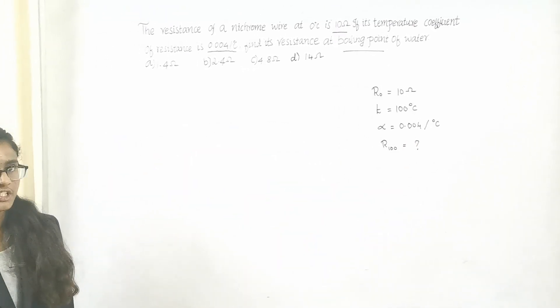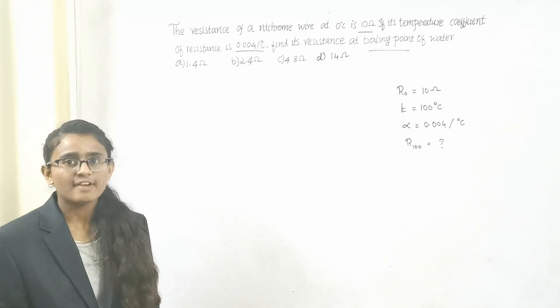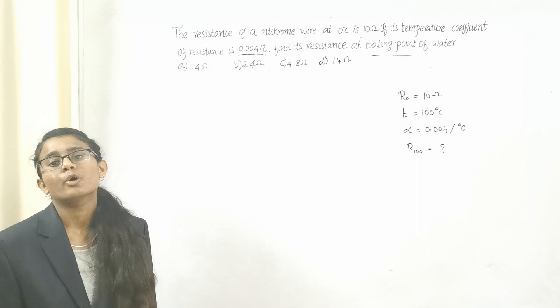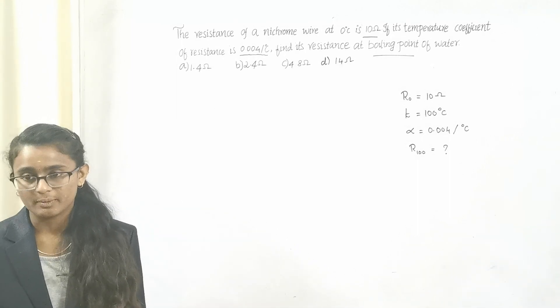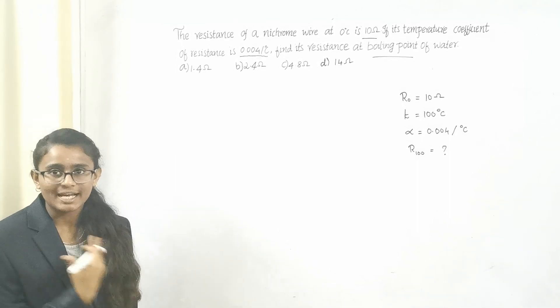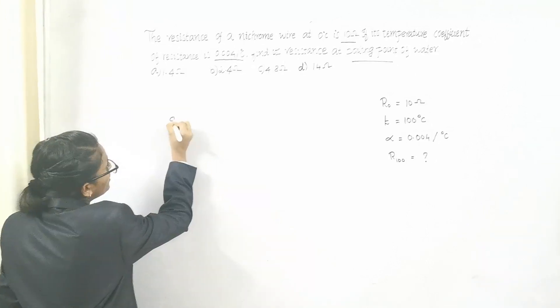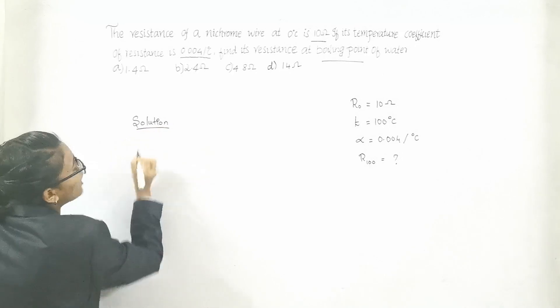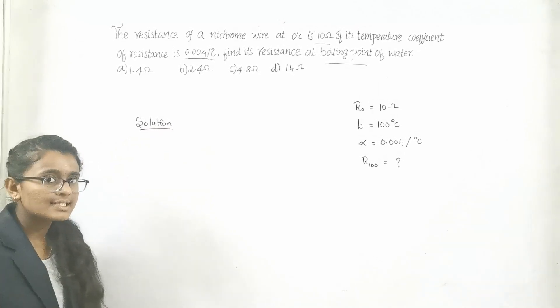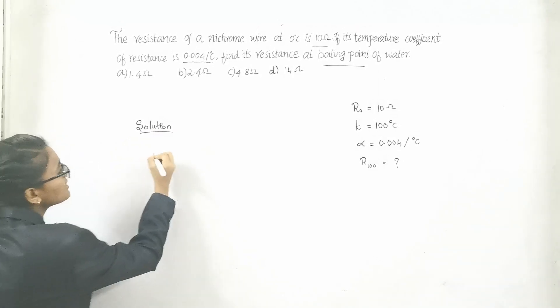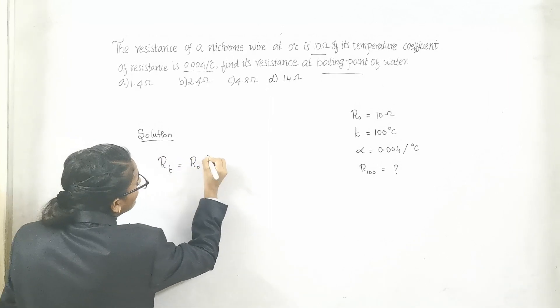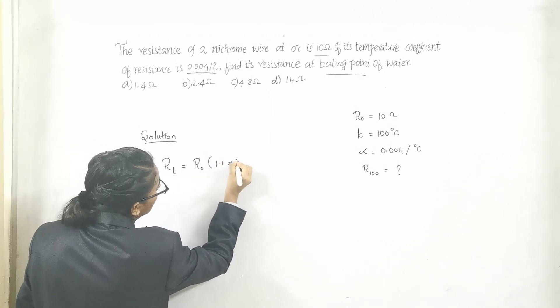Let us solve the question. Do you know the formula for finding the resistance at a particular temperature? I know that you know the formula. It is my duty to write the formula. Solution: The formula for finding the resistance at a particular temperature is RT = R₀(1 + αT).